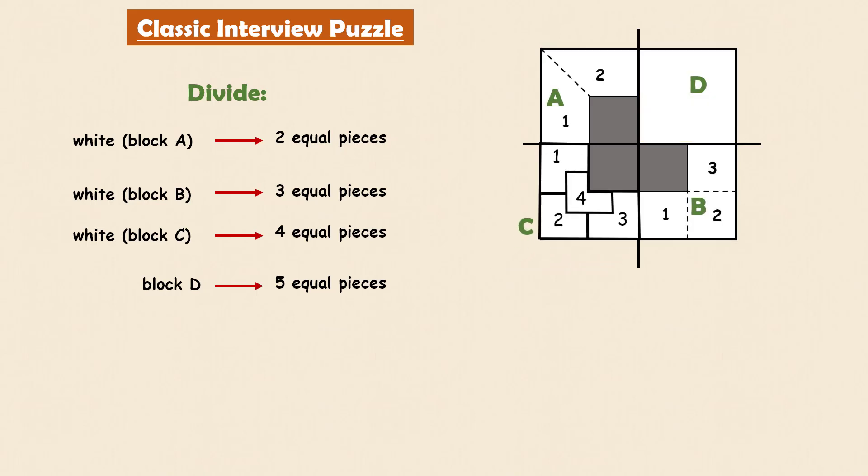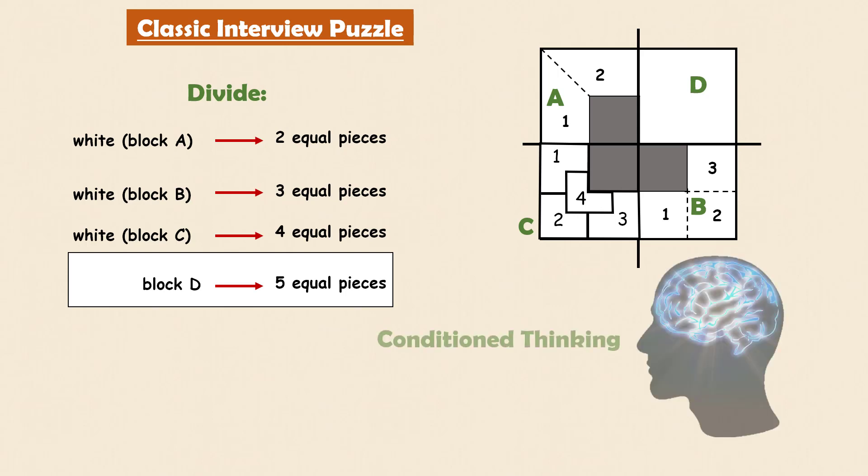Now the final bit of the puzzle is to divide the block D into five identical pieces. The intention behind this whole puzzle is to demonstrate how a human mind can easily undergo conditioned thinking. Conditioned thinking is the process our brain goes through when it has been exercised repeatedly to think in a specific direction.